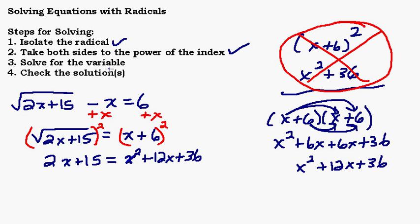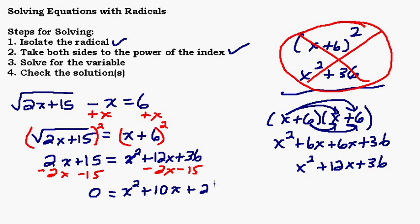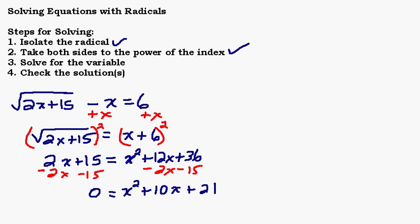We've taken both sides to the power of the index. Now we're on step 3 — solve for x. Notice we have an x squared. When you have an x squared it's a different method of solving — you don't just get your x's on one side and numbers on the other. What you have to do is set it equal to 0 and see if it factors. So I'm going to subtract 2x and 15 from both sides. That gives me 0 on the left, and now I have 0 equals x squared plus 10x plus 21 — a quadratic equation.